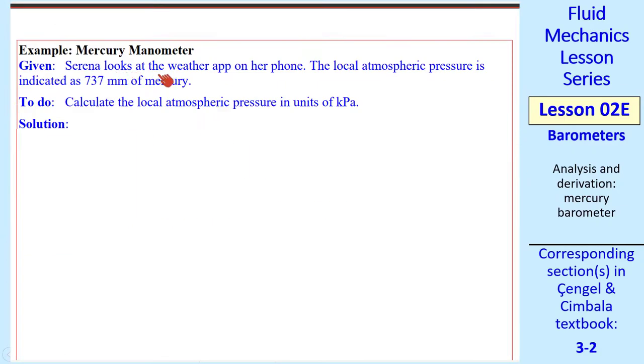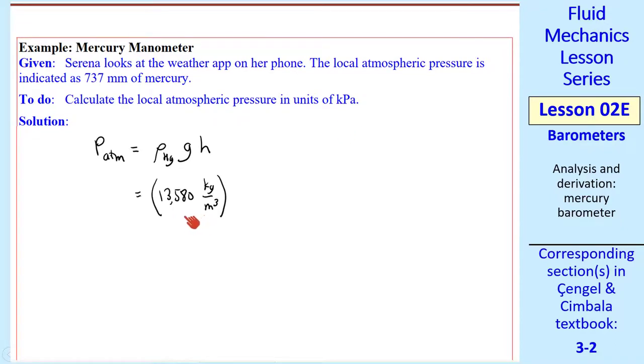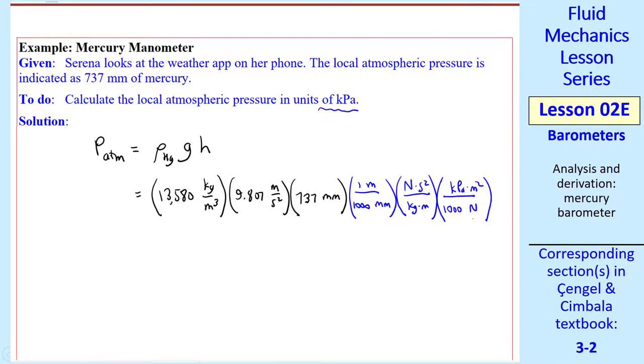Let's do a quick example. Serena looks at the weather app on her phone, and it shows that the local atmospheric pressure is 737 millimeters of mercury. She needs to calculate the local atmospheric pressure in units of kPa. Using our barometer equation, p_atm = (13598 kg/m³)(9.81 m/s²)(737 mm), and then some unity conversion factors: 1 m = 1000 mm, 1 N = 1 kg·m/s², and we want the result in kPa, where 1 kPa = 1000 N/m². My calculator gives 98.153 kPa. Since I'm limited to three significant digits, I'll report my final answer as 98.2 kPa.